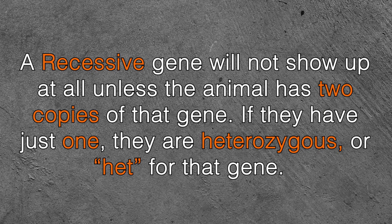Then we have recessive genes. Recessive genes will not show up at all unless the animal has two copies of that gene. If they have just one copy, the animal is heterozygous for that particular gene. In the hobby, animals carrying only one copy of a recessive gene that don't display it are referred to as het, which is short for heterozygous. However, if an animal has two copies of the recessive gene, it's going to be referred to either as a visual or just by the name of that particular trait, since that gene is only displayed visually when the animal carries two copies.